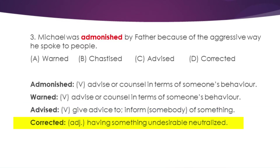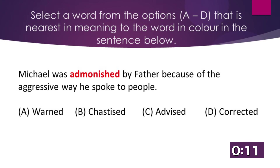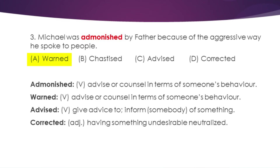Option C — advised — is a verb meaning give advice to, inform somebody of something. Option D — correct — is an adjective meaning having something undesirable neutralised. From our options, the nearest in meaning to 'admonished' is warned, because warned means advise or counsel in terms of someone's behaviour — and that is exactly what admonished means: advise or counsel in terms of one's behaviour.